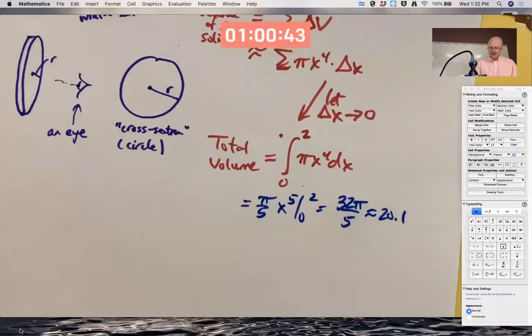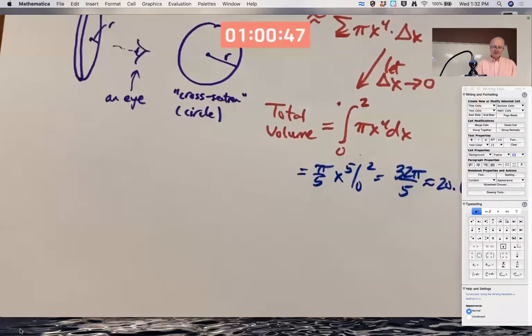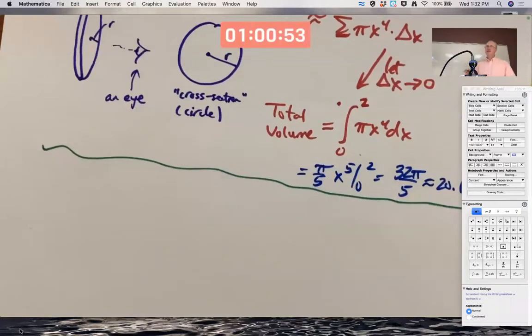Second type of problem to do before the end of class today is a problem where we're still going to think about slicing. We're still going to think about delta V as approximately something involving delta X, and we're still going to let delta X go to zero and get an integral.